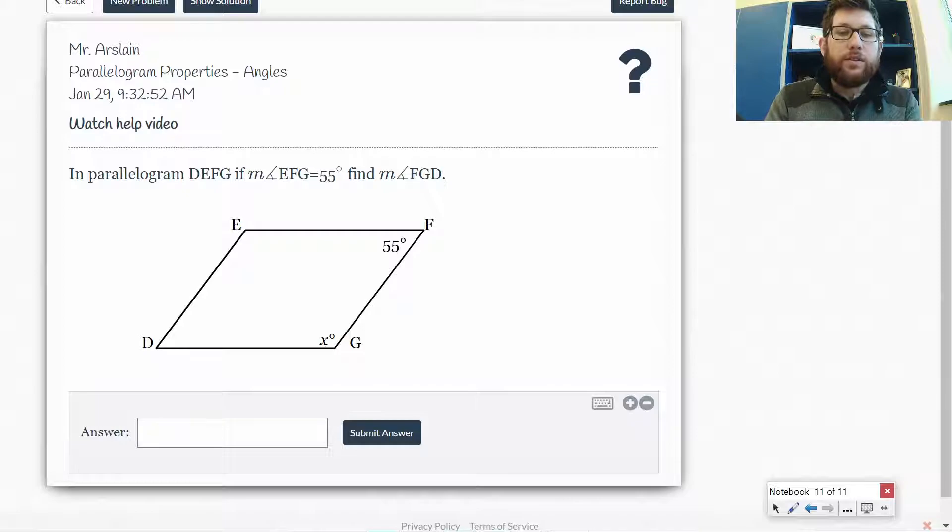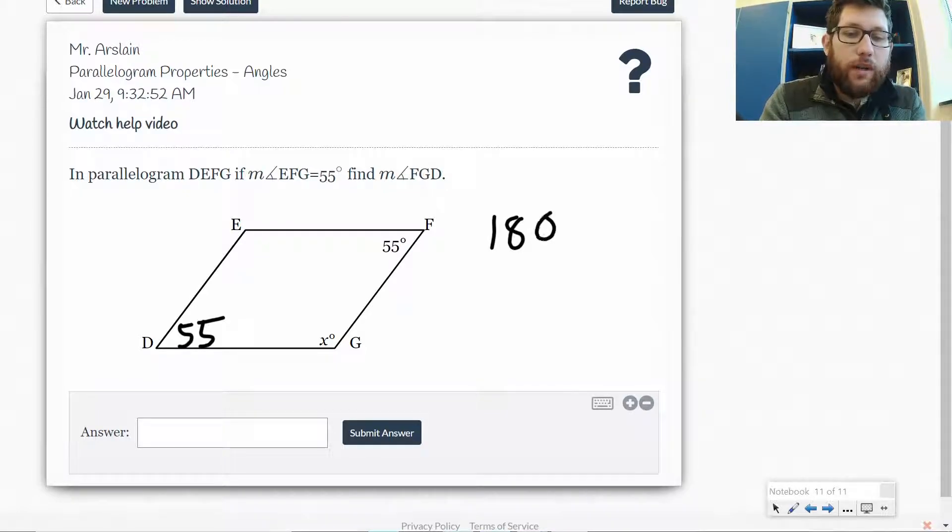So let's take a look here. So if this is 55 at angle F at angle D, it's also going to be 55 degrees. Now angles opposite each other are equal. Angles next to each other or consecutive, sometimes the word we use, add up to 180. So what I'm going to do here is 180 minus 55. And what I get is 125.